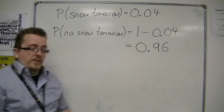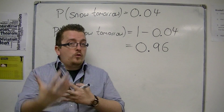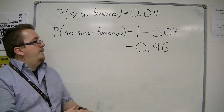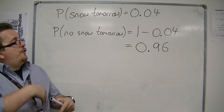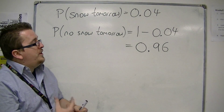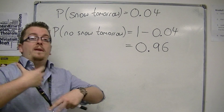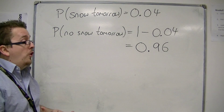So that is quite straightforward, and if a question is going to ask you about the probability of something not happening, it's likely to be a decimal when it asks you.